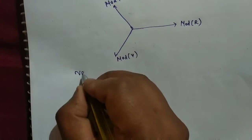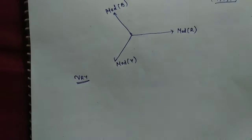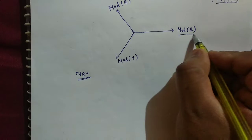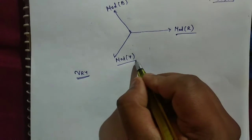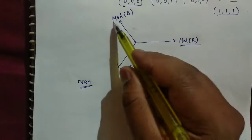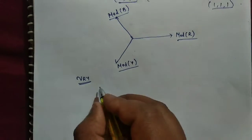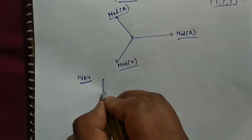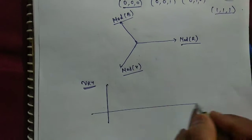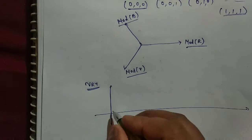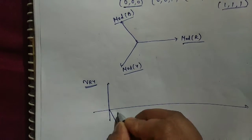Now if we want V_RY, so we have to take only modulating signal R and modulating signal Y. No need to take modulating signal B.